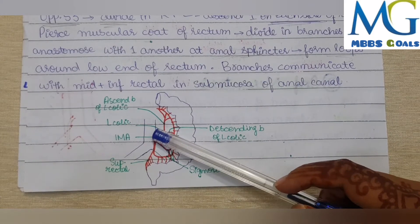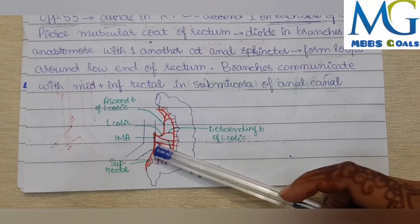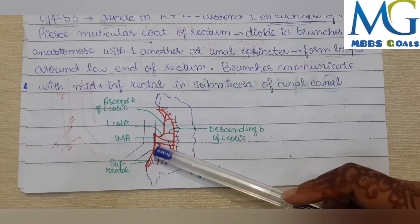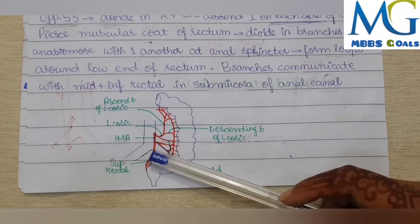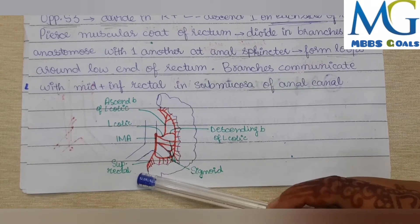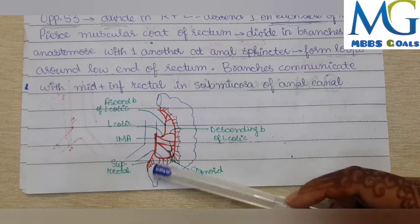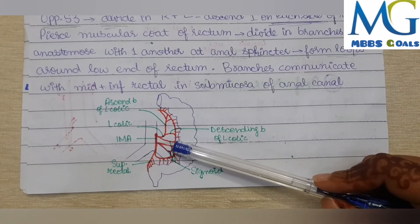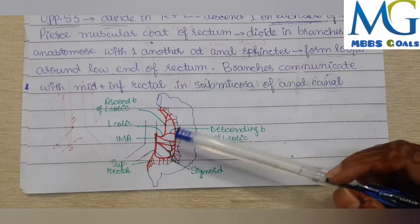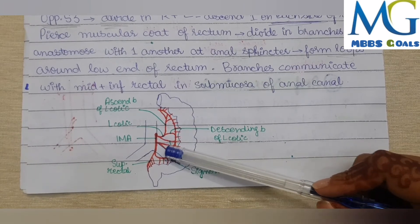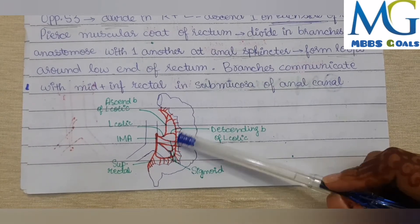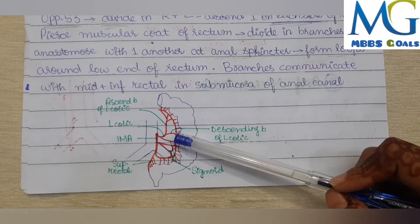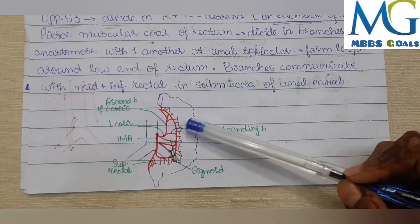These branches — middle and inferior rectal arteries — anastomose with the anal sphincter. The inferior mesenteric artery supplies the inferior part via the sigmoidal mesocolon. The superior rectum and its rectal branches, as well as the left colic artery, supply the infrasupracolic compartment via ascending and descending branches to the colon.